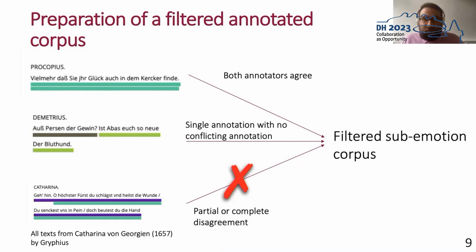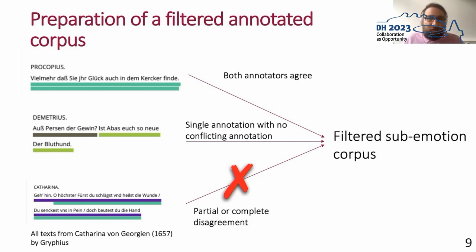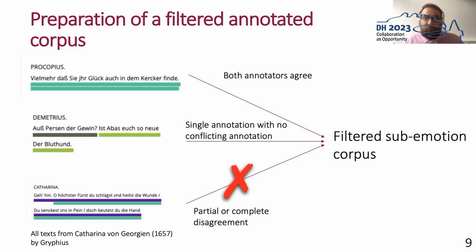This filtered corpus only contains annotations both annotators agree upon, but also annotations by a single annotator that are not in conflict with another emotion annotation by the partner annotator. All annotations the annotators disagree upon — whether fully or partially — are excluded. This filtered sub-emotion corpus offers a more valid and usable view of our emotion annotations and proved to be beneficial for machine learning tasks, since we remove inner inconsistencies, which is always good for models.